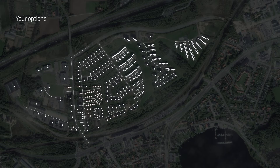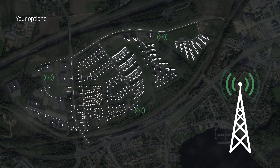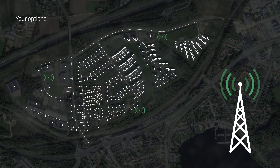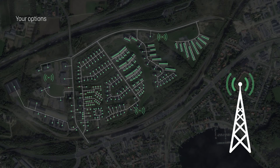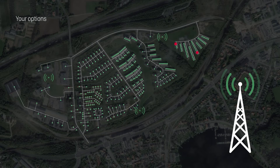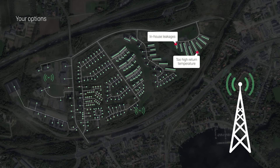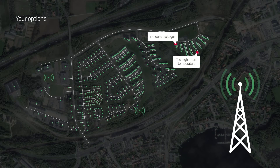To achieve this, you need to know what's going on in your distribution network. With Reedy, you can collect data and visualize it to get the full overview. This transparency gives you the necessary knowledge of the causes behind the problems and where to optimize. You can identify the buildings and end users that put the most stress on your network, whether it's due to in-house leakages or too high return temperature.